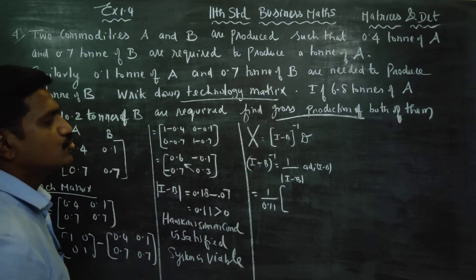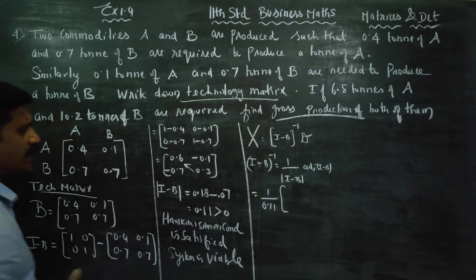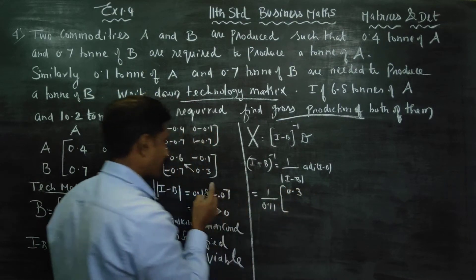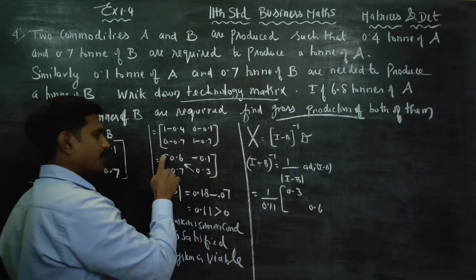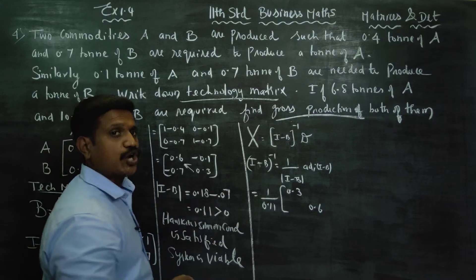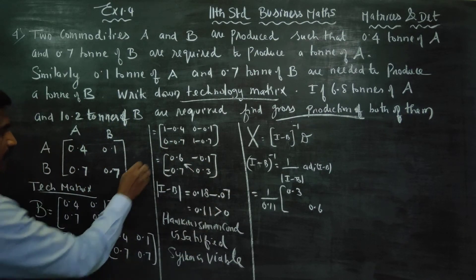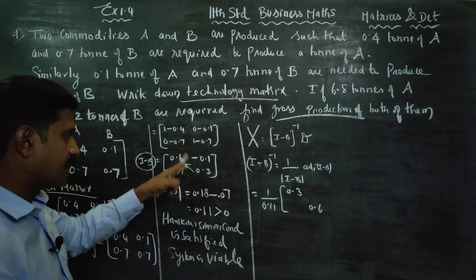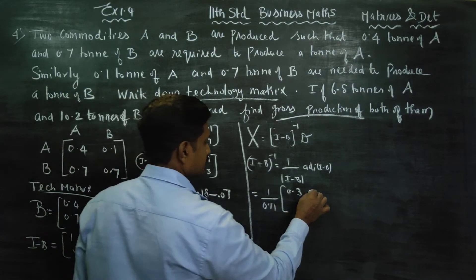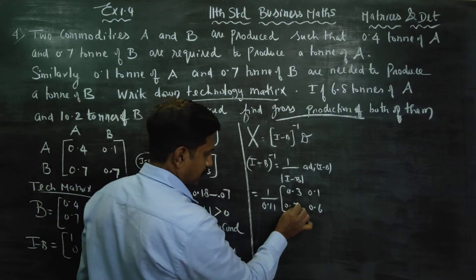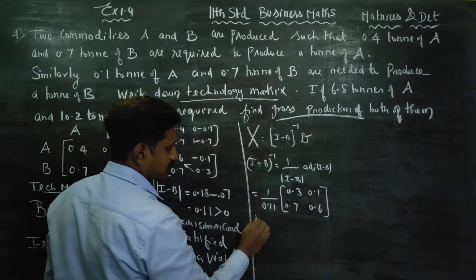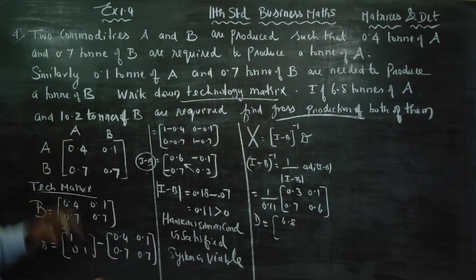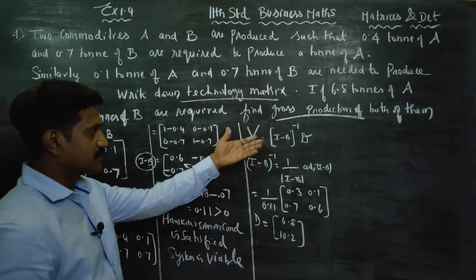What is the adjoint of I minus B? To find (I minus B) inverse, we use the adjoint method — interchange the diagonal elements and change the signs of the off-diagonal elements. The demand values are: D for A is 6.8 tens and D for B is 10.2 tens. Now I minus B inverse is ready.